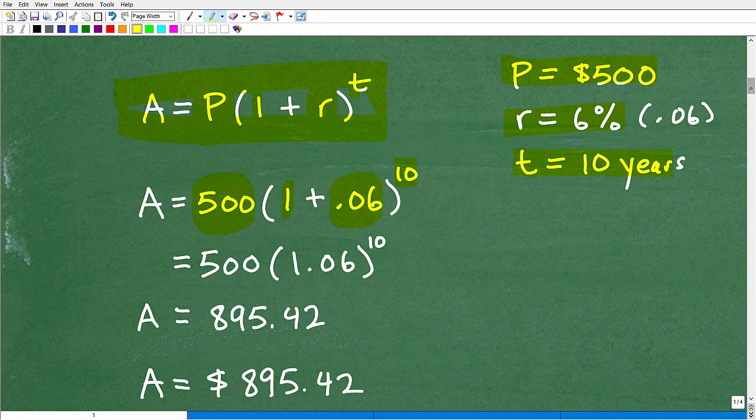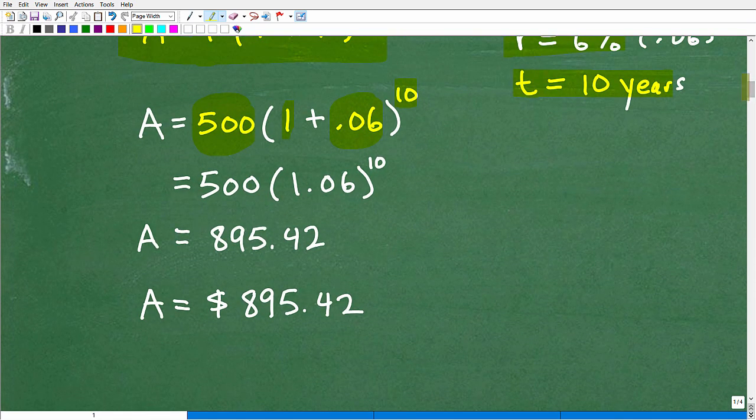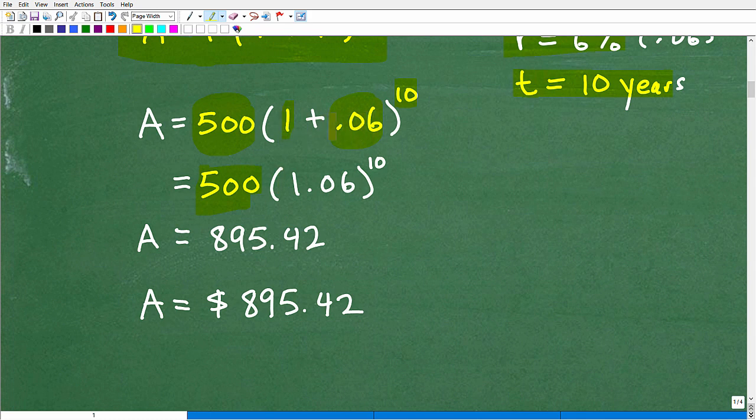Again, we have our nice formula. The amount is equal to the principal times 1 plus R times T. So as we discussed, our principal amount is 500. R. So here's our principal is 500. R is 6%. But we have to express this as a decimal. So this is 0.06. So 6% as a decimal is 0.06.